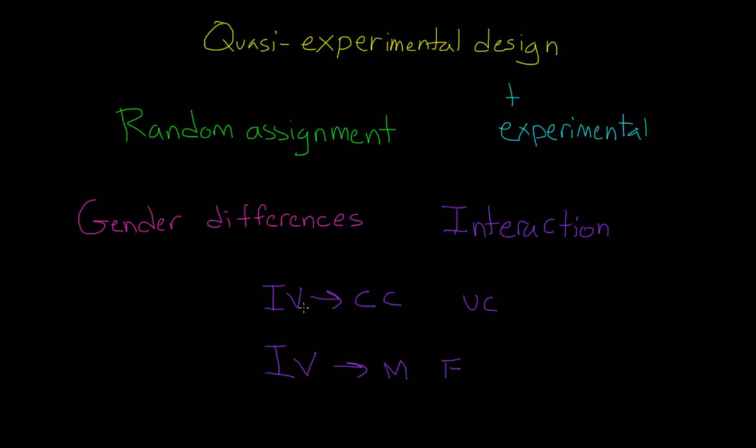And this is the one where I've assigned different levels. I can easily put people into a comfortable chair group or an uncomfortable chair group. But the second independent variable, this is what adds a quasi-experimental design to this experiment because clearly I can't decide who should be in the male group and who should be in the female group.